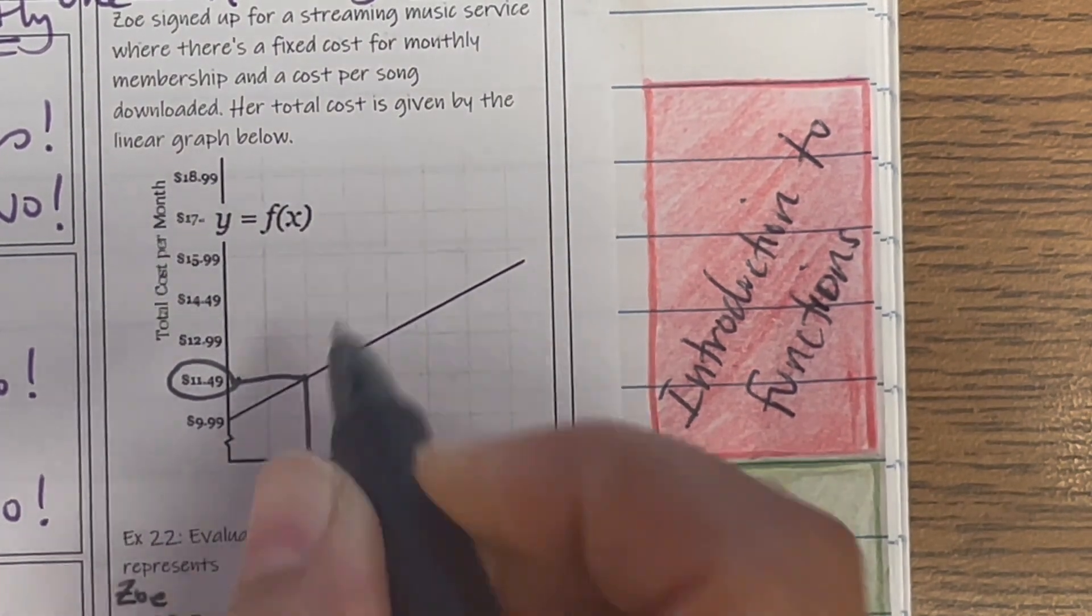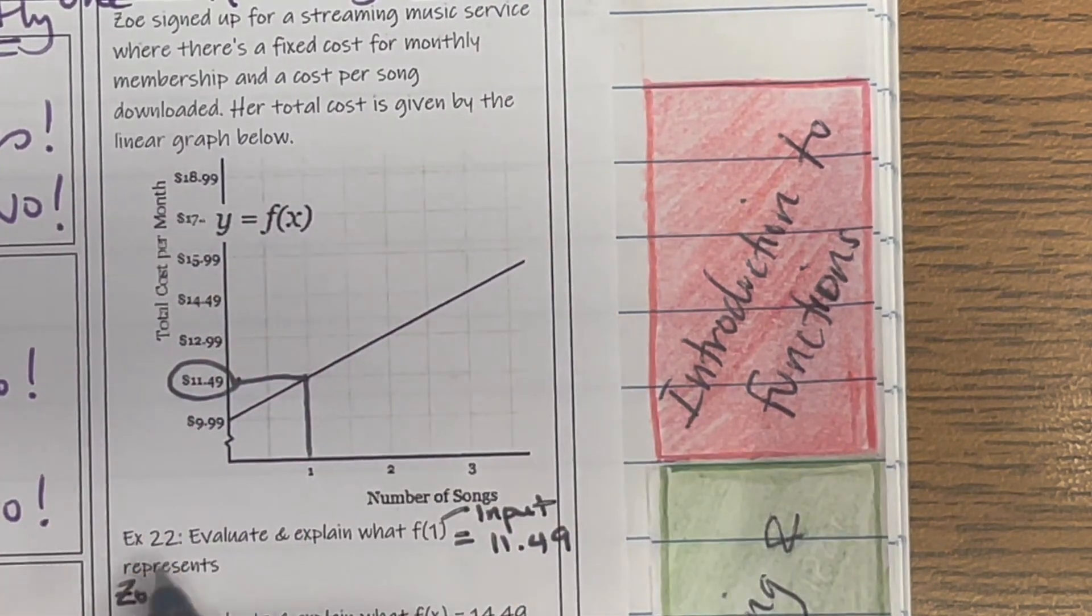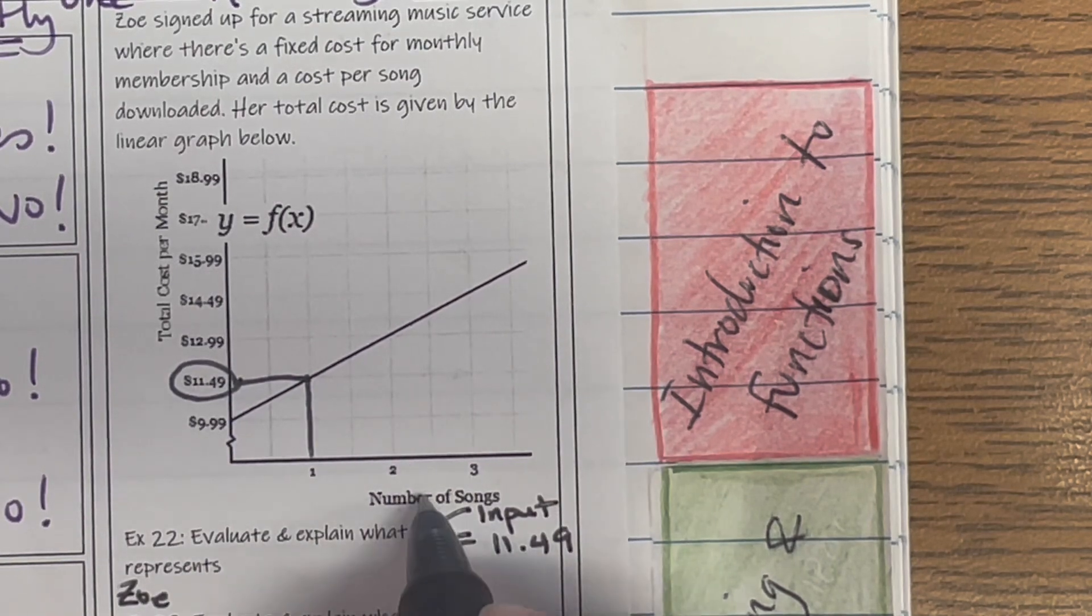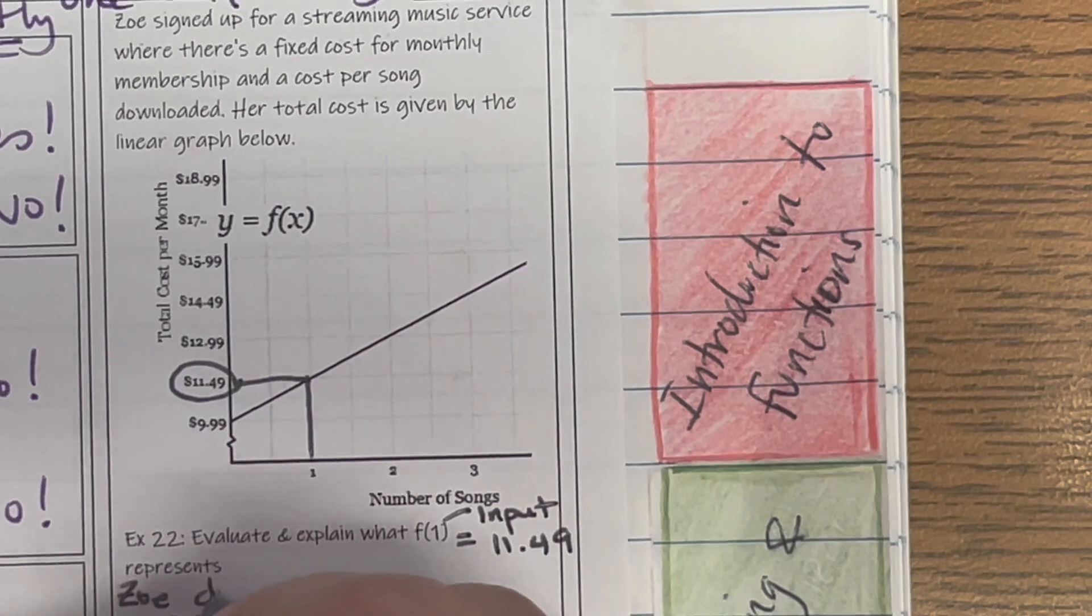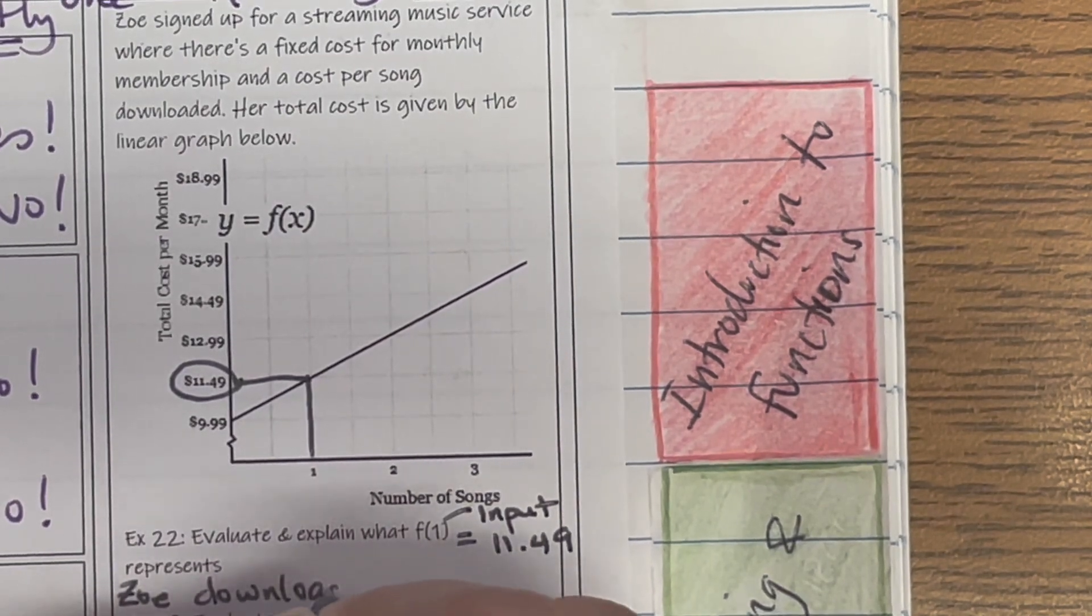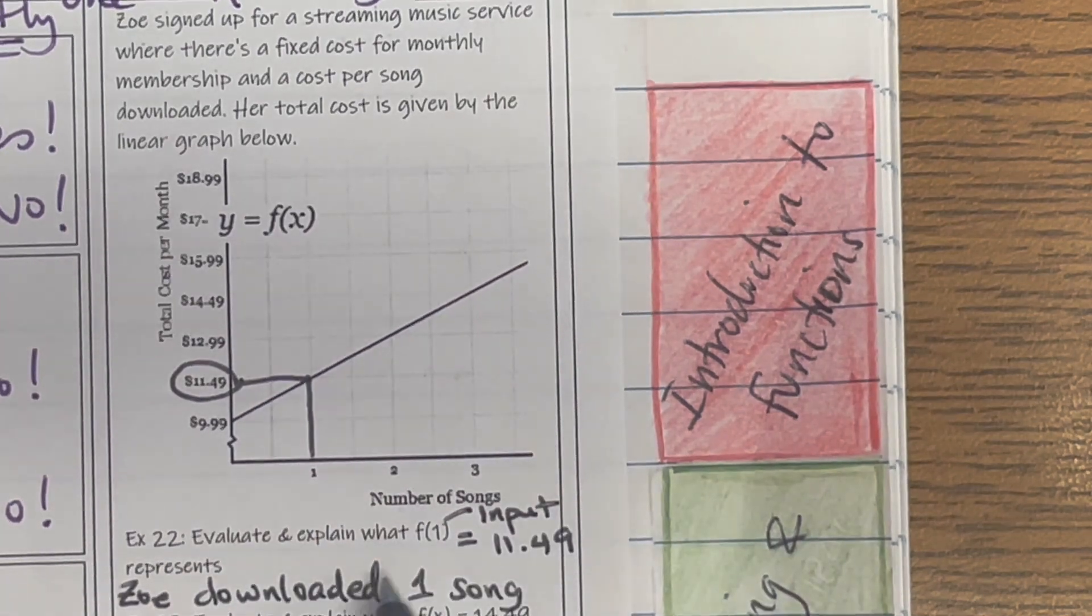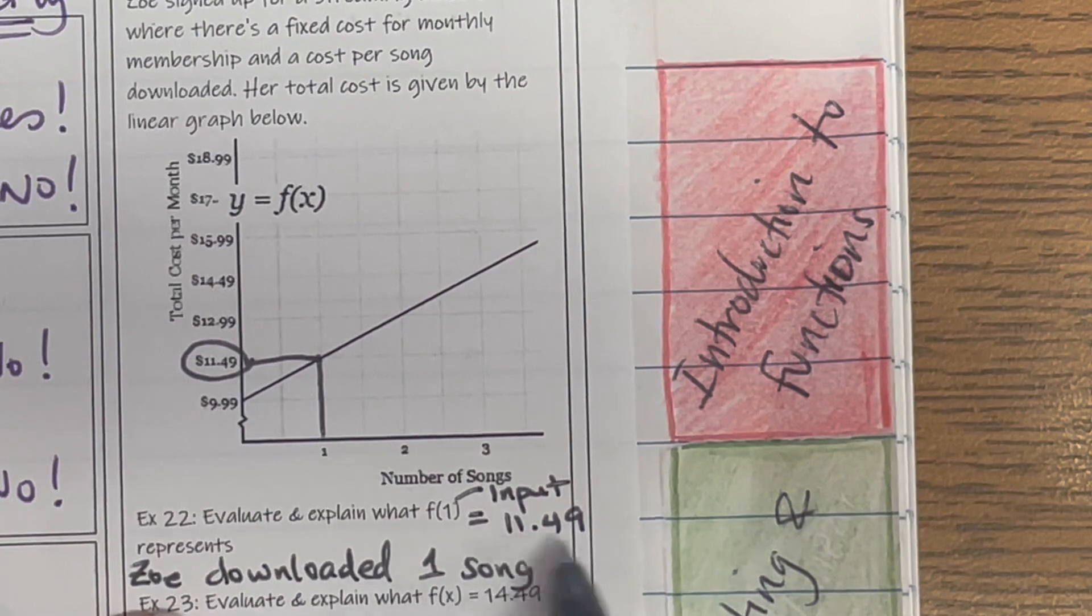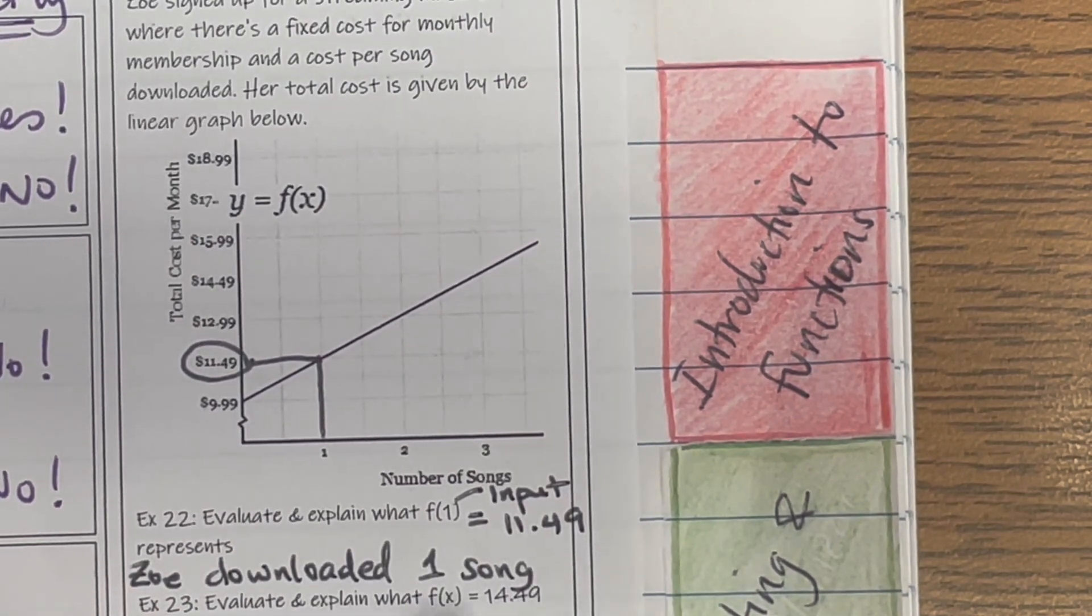So explain what that represents. Zoe signed up for a streaming service where there's a fixed cost for monthly membership and a cost per song downloaded. So Zoe downloaded one song. She downloaded one song. It cost $11.49, but they're not asking me about this equals $11.49. They're just asking me what does F of 1 represent. Zoe downloaded one song.